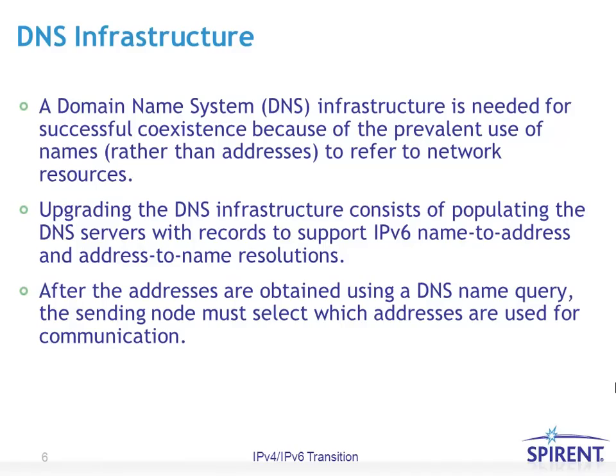The DNS infrastructure is needed for successful coexistence because of the prevalent use of names rather than addresses to refer to network resources. This is even more true with IPv6, as discussed in the addressing architecture, where addresses could be 128 bits long. Upgrading a DNS infrastructure consists of populating DNS servers with records to support IPv6 name-to-address and address-to-name resolutions.